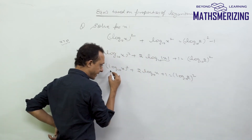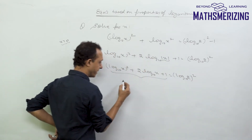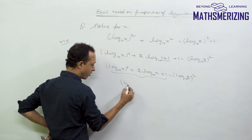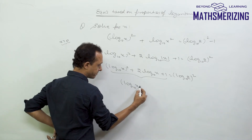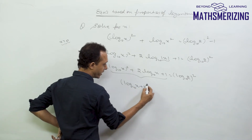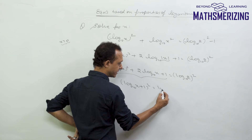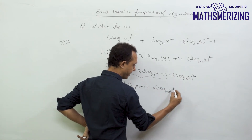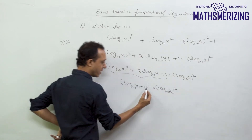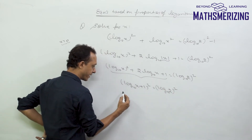Now this is in the form a² + 2ab + b², so I can write it as (log x base 10 + 1) whole square, and this is equal to (log 2 base 10) squared.